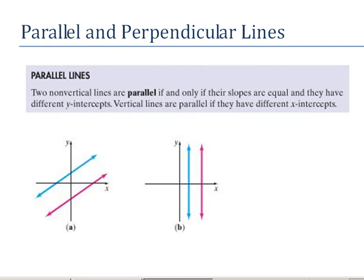It says two non-vertical lines are parallel if and only if their slopes are equal and they have different y-intercepts. Vertical lines are parallel if they have different x-intercepts.